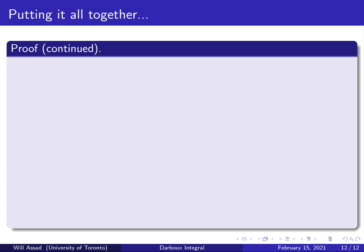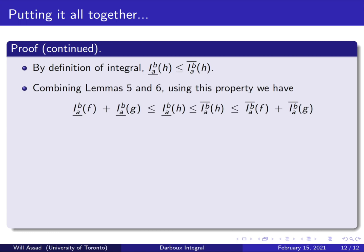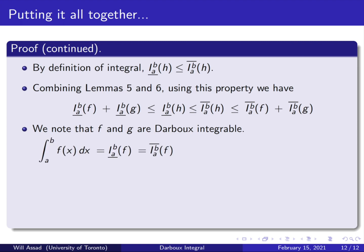Now we can put everything together and prove the theorem. Continuing the proof, we note that by definition of the Darboux integral, the lower integral is always less than or equal to the upper integral. We combine lemmas 5 and 6 using this property to get a chain of inequalities. We now use our assumption that f and g are Darboux integrable: the integral from a to b of f(x) dx equals both the lower and upper integral of f, and the same holds for g. Note that we did not need this assumption for any of the lemmas — all intermediate results hold independently.